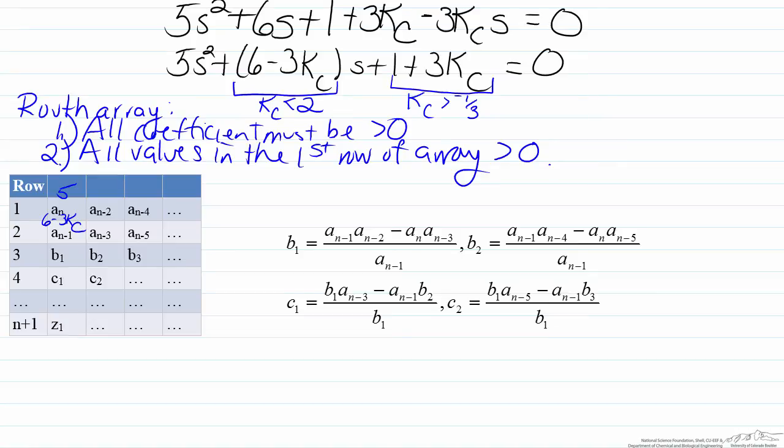an minus 1 will be 6 minus 3Kc. The reason why this is the case is we always start with the one with the highest power and work ourselves down. And our other term for the an minus 2 is 1 plus 3Kc. All other coefficients of a are going to be 0 because there are no other terms left.